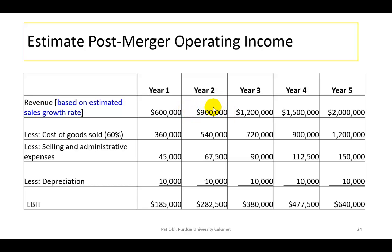One input is the historical pattern of the target firm's sales. Second would be your estimate of the synergistic benefits that would accrue if this target firm is acquired by the acquirer. Third would be your view of the strength of the economy going forward, because how a firm performs in the future is partly reliant on how the overall economy is expected to perform. Looking at the historical relationship between cost of goods sold and revenues, you can derive a ratio — in this example, 60% — so 60% of revenues represents projected cost of goods sold.